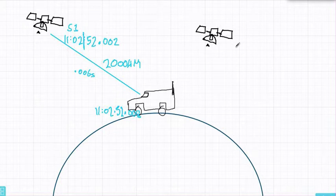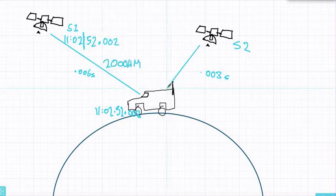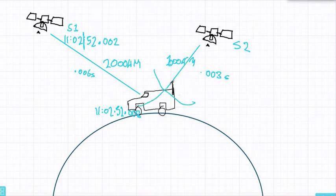We do the same thing for satellite S2. This one the clock was different by 0.003 seconds. And light or GPS signals or anything else radio wave based travels 1,000 kilometers every 0.003 seconds. So we know how far the van is from this one as well. With those two distances we can draw arcs and triangulate the position of the van. And now we know where the van is.